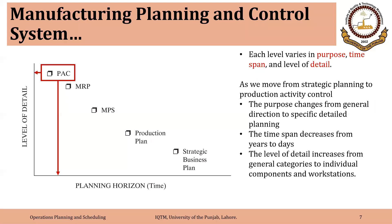We are discussing production activity control at a higher level of detail — the day-to-day activities performed to execute the plan. We are concerned with what is to be produced, when it is to be produced, on which machine it is to be produced, and how many machines and workers will be required.